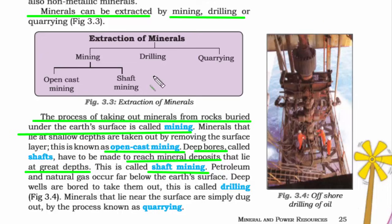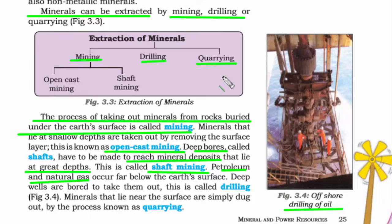The next type of extraction is drilling, usually done to extract petroleum and natural gas. The third type is quarrying, done by simply digging out the mud. It is comparatively cost-effective and is good for minerals that lie near the surface where you don't have to go deep down.